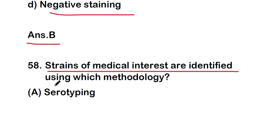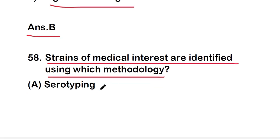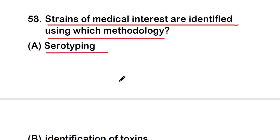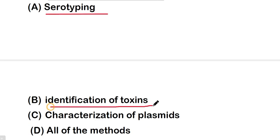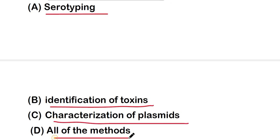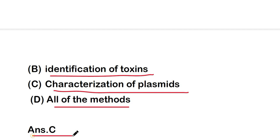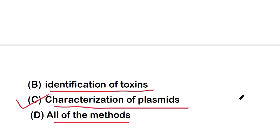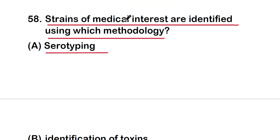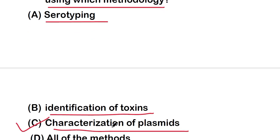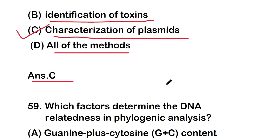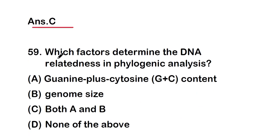Next question: strains of medical interest are identified using which methodology? Options are: serotyping, identification of toxins, characterization of plasmids, or all of the above. The right answer is option C — characterization of plasmids. Strains of medical interest are identified using characterization of plasmids.